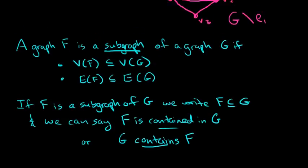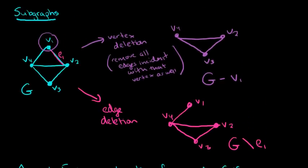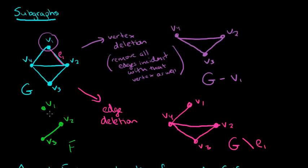Going back to our example, we can consider other types of subgraphs. Let's remove vertex V4, leaving only V2, V1, and V3. When I remove V4, all three edges incident to it automatically get removed. Then maybe I also remove edge E1. This is a strange-looking graph F, but it is indeed a subgraph because its edge set and vertex set are both subsets of the original graph's sets. Even though it looks funny, it certainly is a subgraph — it's not connected though, since V1 is an isolated vertex.